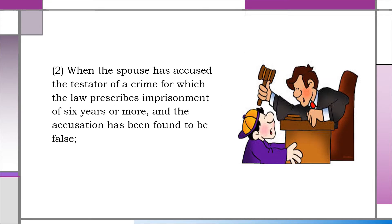Number two, when the spouse has accused the testator of a crime for which the law prescribes imprisonment of six years or more, and the accusation has been found to be false. Likewise, this cause is common with Articles 919 and 920, and had been discussed under those articles.